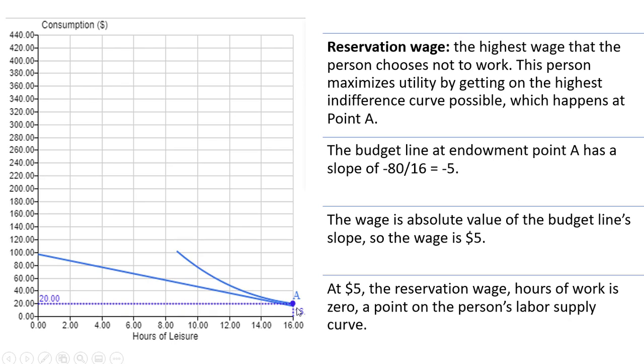Point A has non-labor income of $20. So if this person doesn't work, they can enjoy 16 hours of leisure during the day and $20 of consumption spending. The budget line in this diagram at the endowment point has a slope of minus 5. Just rise over run, 100 minus 20 here. So we've got a rise here of 80, and then the run here is from 0 to 16, or 16.